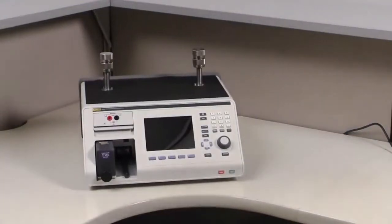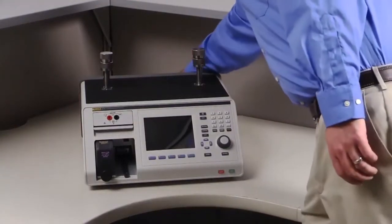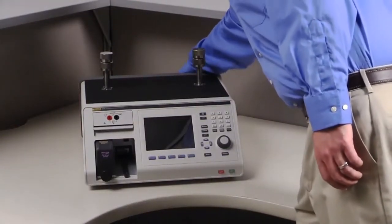The 2271A can be installed on any flat, sturdy work surface. Simply connect to a regulated supply pressure to begin controlling pressure.